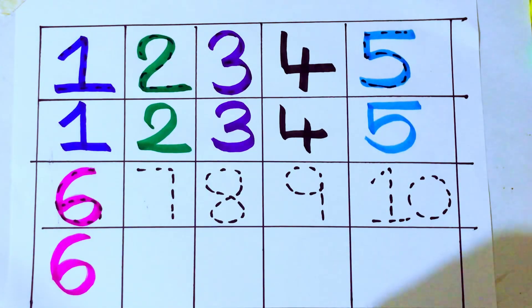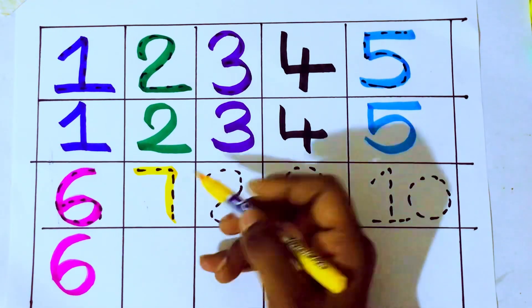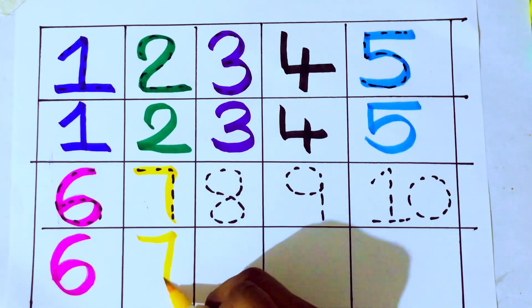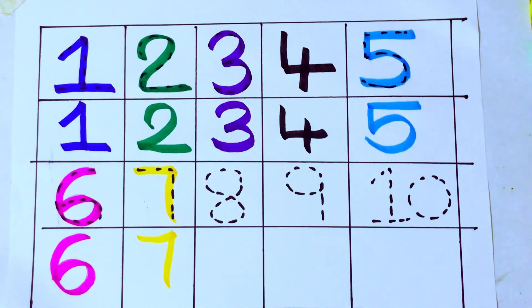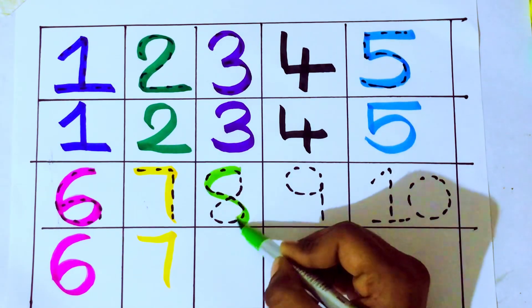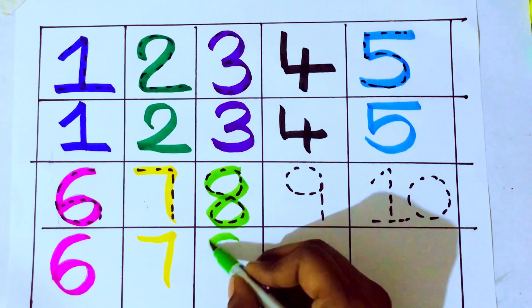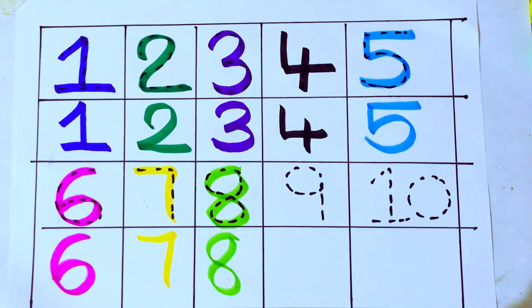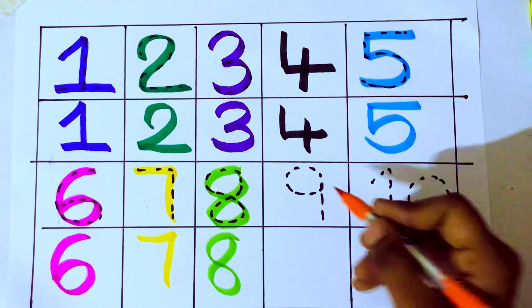And yellow color. 7. Yellow color. 7. S-E-V-E-N. 7. Light green color. 7 after 8. Light green color. 7 after 8. E-I-G-H-T. 8. E-I-G-H-T. 8. And orange color. 9.